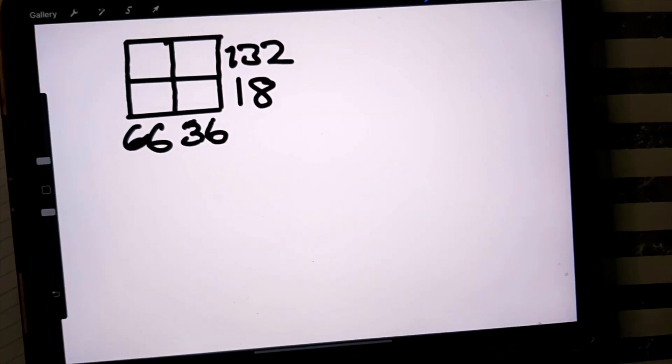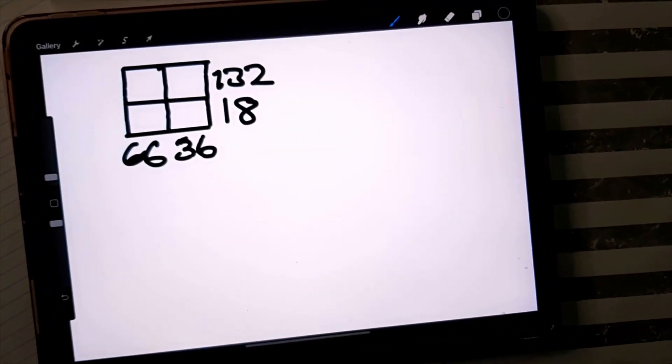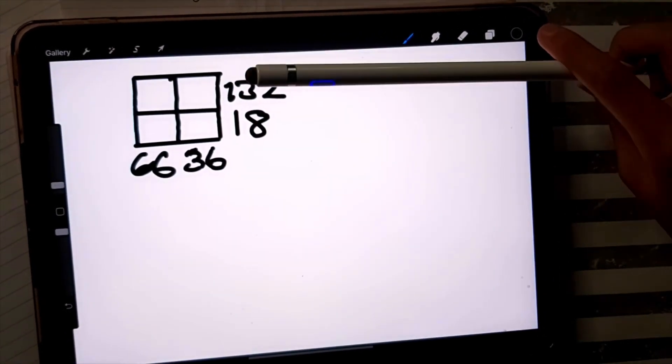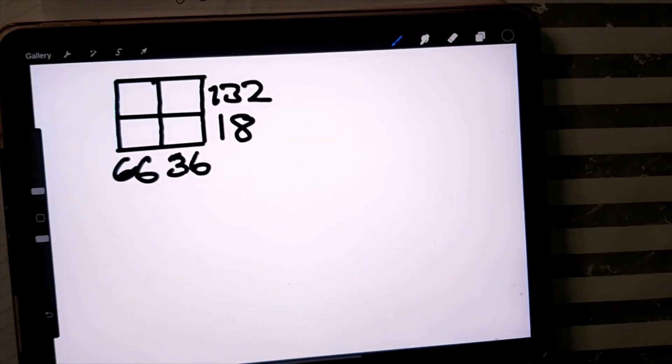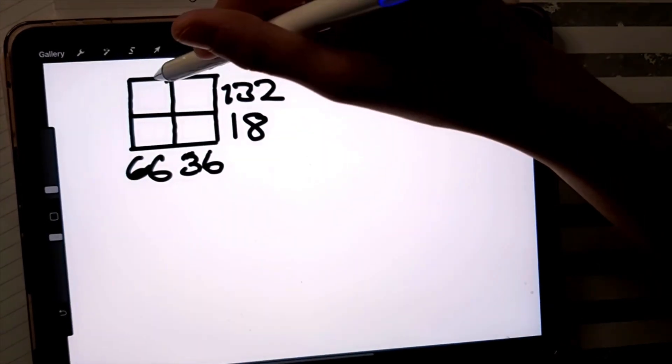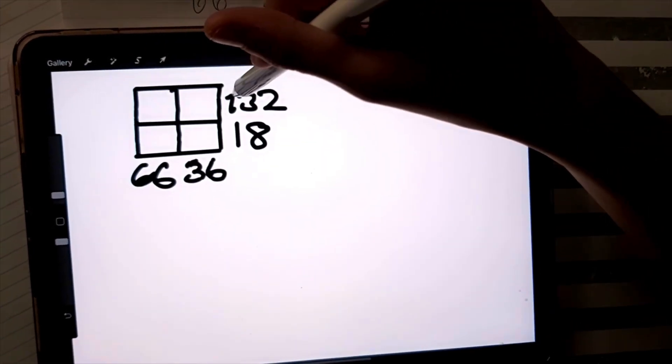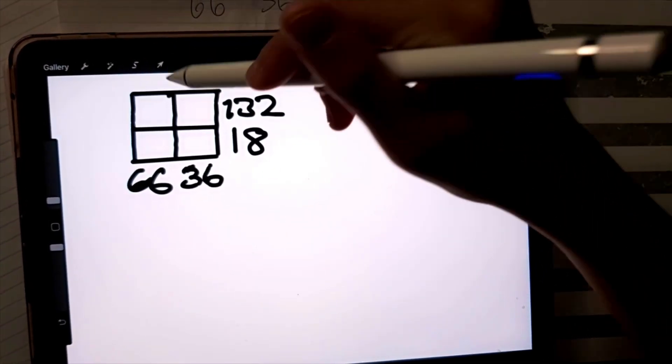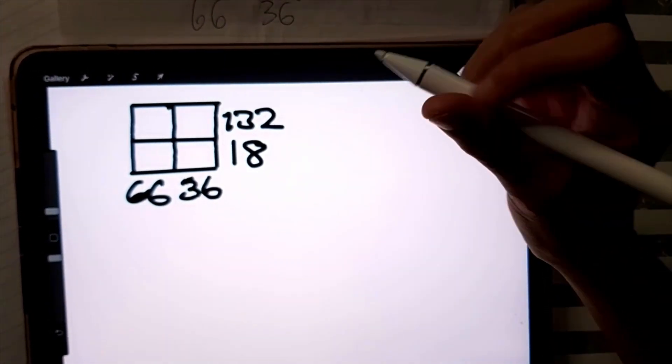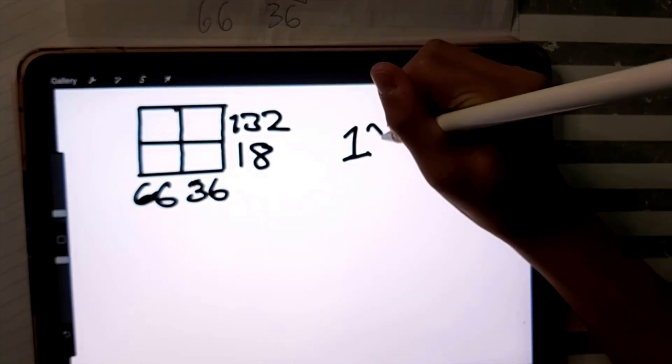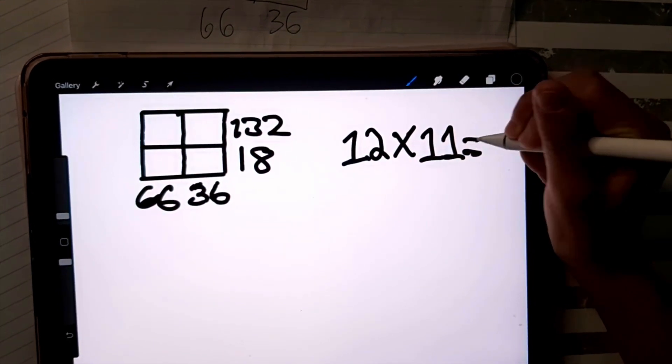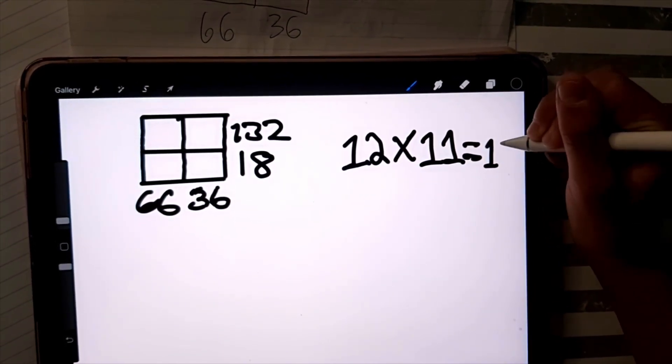The next challenge is this factor cube. So the first thing we're going to look at is the cube. So we're going to answer it now. So we're going to have to go fill in these two blanks to get 132. So maybe 12 and 11 since 12 times 11 equals 132.